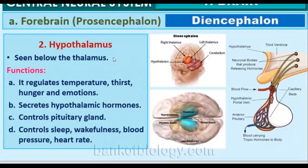The hypothalamus is located below the thalamus. It regulates temperature, thirst, hunger, and emotions. Hypothalamus is the master of the master gland — the pituitary gland is the master gland, and the master of the master is the hypothalamus. The hypothalamus regulates body temperature, thirst, blood pressure, and emotions. Hypothalamus also secretes hypothalamic hormones that control the pituitary gland to release different hormones.